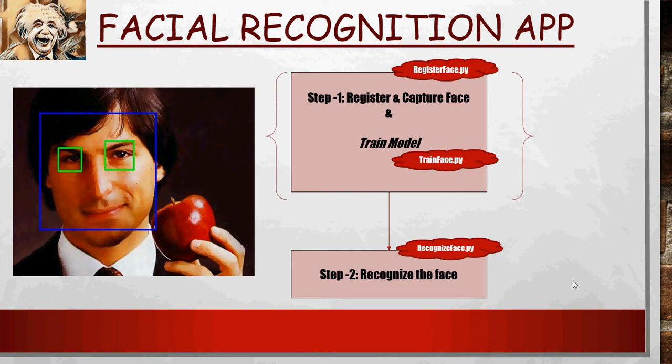Please note that the first piece is only going to be one-time work. You register it once — imagine you are registering an employee onto a system with their face and employee ID only once. From then on the app is ready and you can use the recognize face option. Step one is one-time registration, then recognition.